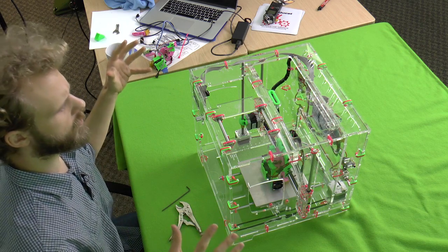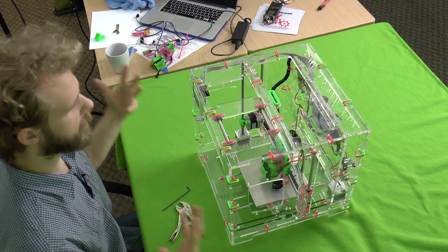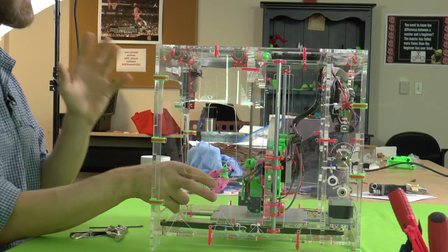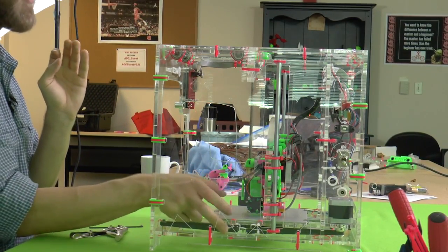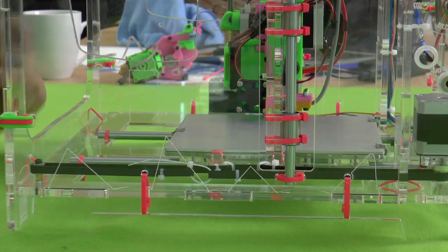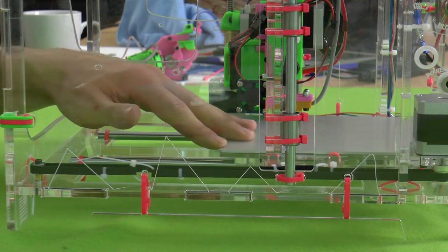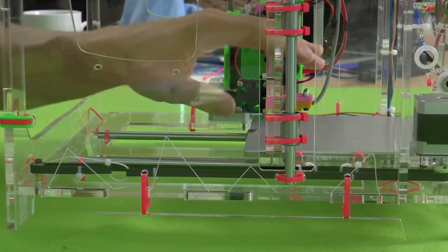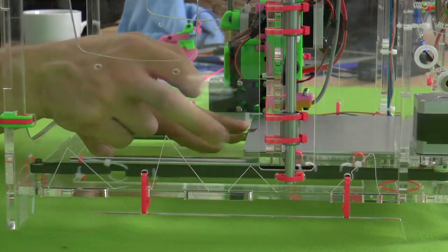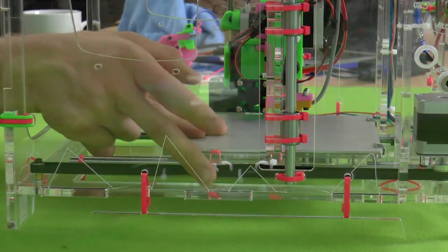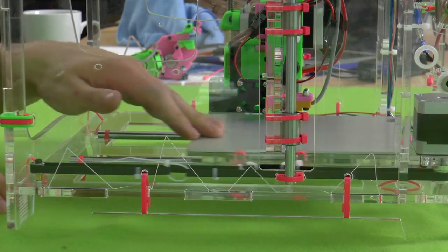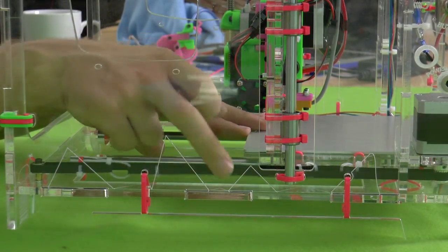But the range of values that work for the belts is actually high. Now let's start with the Y belt. The Y belt is crazy loose right now. I recommend getting into the habit of always putting the Y and X assembly at the same spot when you're adjusting the tension, because it's going to feel different depending on where you put it. So I'll always put it in the back here so I have good access to the zip tie.